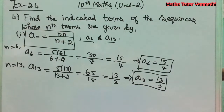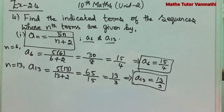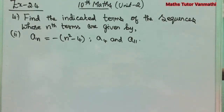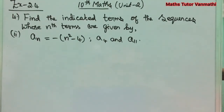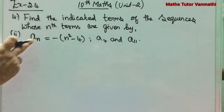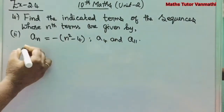These are the a_6 = 15/4 and a_13 = 13/3 values. Next we are going to find the second subdivision in the same problem. Exercise 2.4, fourth problem, second subdivision: a_n = -(n² - 4). We are going to find a_4 and a_11.